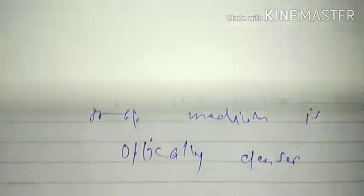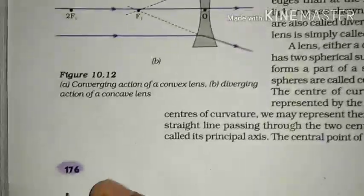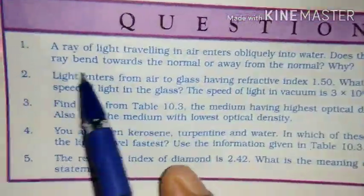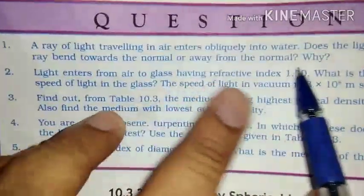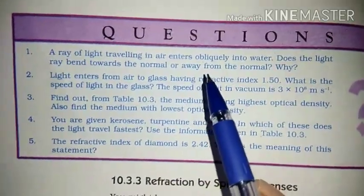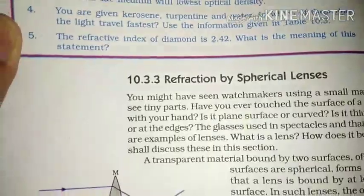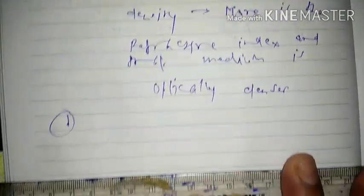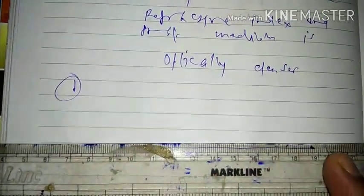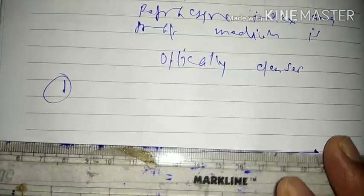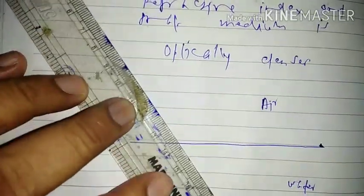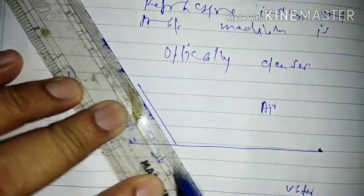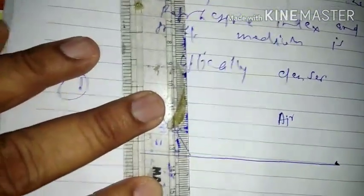Using this concept we can solve the in-text questions of our NCERT. See page 176, question number one: 'A ray of light traveling in air enters obliquely into water. Does the light ray bend towards the normal or away from the normal, and why?' To solve such questions we must draw a ray diagram. Suppose this is the boundary between two transparent media — the first medium is air and the second medium is water — and the ray of light enters obliquely at point A.